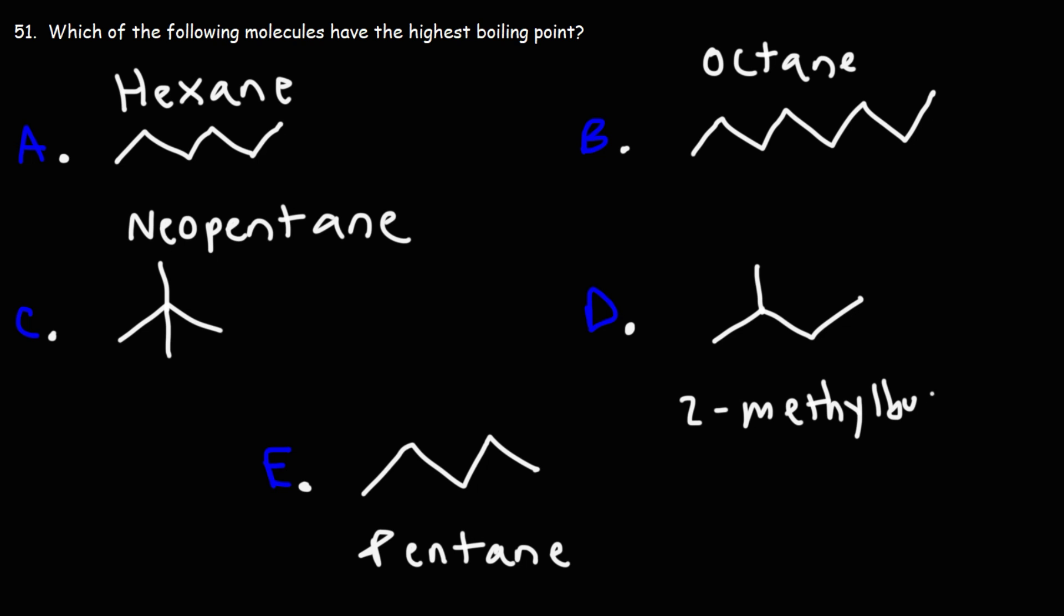So which one of these alkanes have the highest boiling point? Now all of these alkanes, they're non-polar. They only have CH bonds. As a result, they don't have any hydrogen bonding.